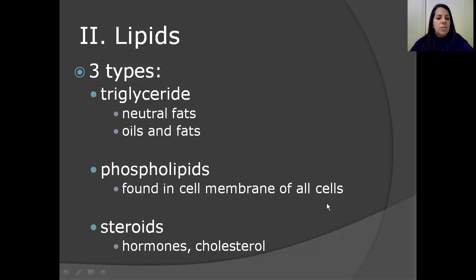Now we're going to move into three different types that we're going to learn about today. The first one is triglyceride, which is neutral fats, oils and fats. The second one is phospholipids, which is found in the cell membrane of all cells. And thirdly, steroids, which are hormones and cholesterol.